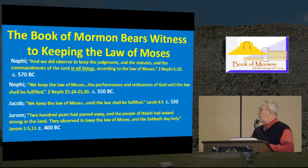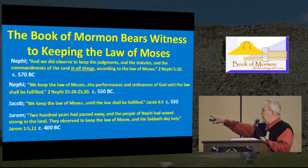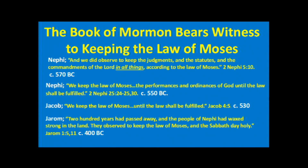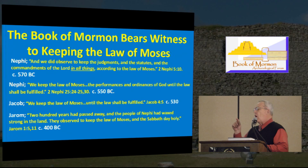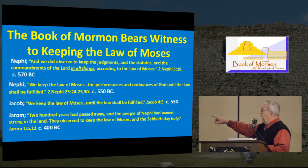The Book of Mormon itself — looking at the dates highlighted in white — each one of these references is talking about a certain time period, and they're all bearing testimony to the fact that these people kept the law of Moses. When you have Mormon's abridgment, he's going to note that they did observe to keep the judgments and the statutes and the commandments of the Lord in all things. This is going to mean the Passover; they kept all of the ordinances that were a part of the law of Moses.